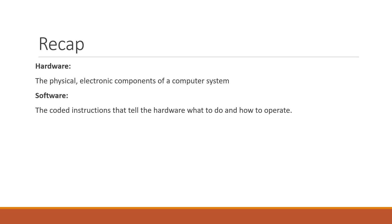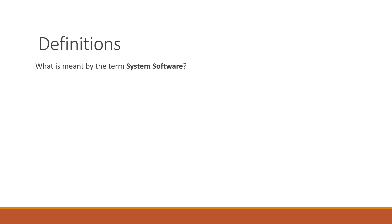Before we begin, let's recap two key terms. In the previous video, we looked at hardware, which is the name for the physical electronic components of a computer system. In the following lessons for test 1, you will be looking at software, which is the name given to the coded instructions that tell the hardware what to do and how to operate. Let's begin by defining the terms system software, proprietary software, and open source software.